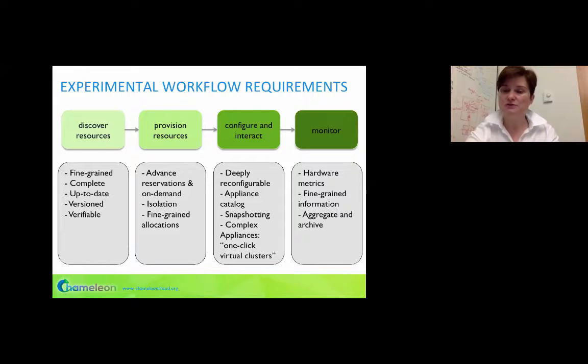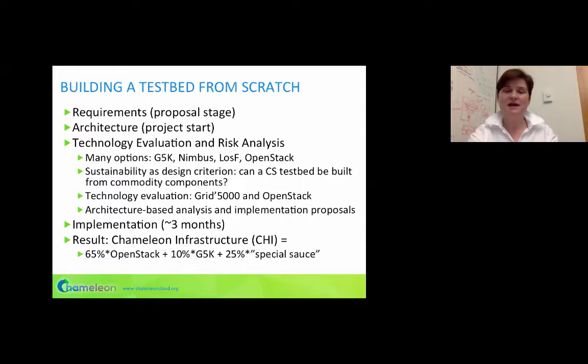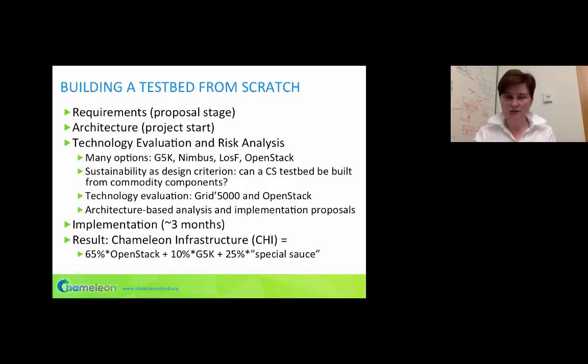To illustrate how we implemented a system fulfilling all those requirements — when we started we had a blank page, absolutely nothing implemented. We had some ideas from user interviews, architectural ideas, and several different implementation options, but no working system. That was a tremendous opportunity to build a system leveraging the best things available in the open source community. Starting with requirements, we created an architecture, then began technology and risk evaluation, considering software from the Grid5000 project in France, Nimbus — the first open source IaaS implementation from my group — and OpenStack.